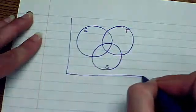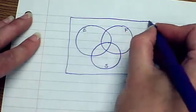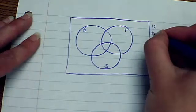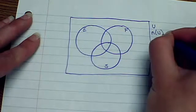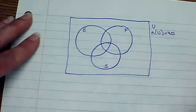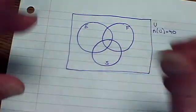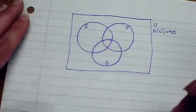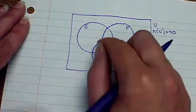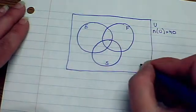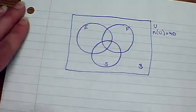Now it tells me that in our universe, the number in the universe was 40. So let's remember that, the total number here is 40. It also says that three students did not study any of these, so they're on the outside here. There's three people out here.